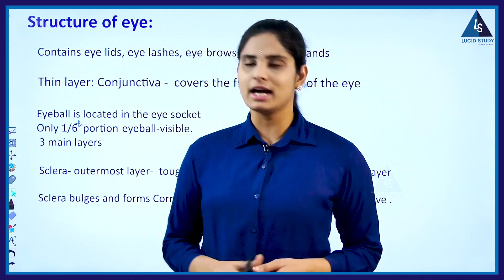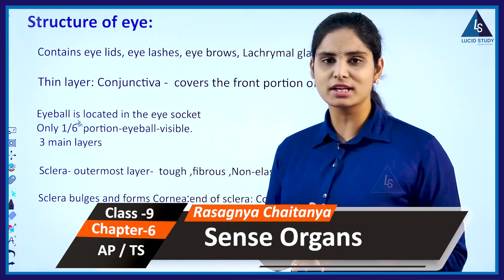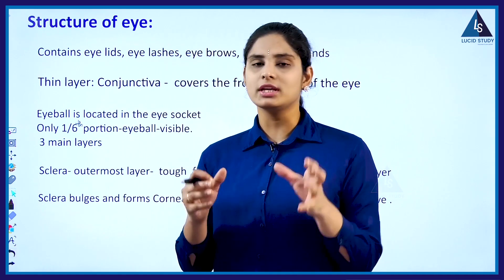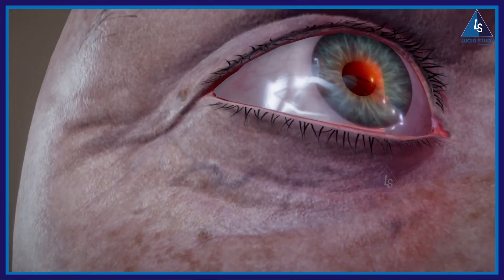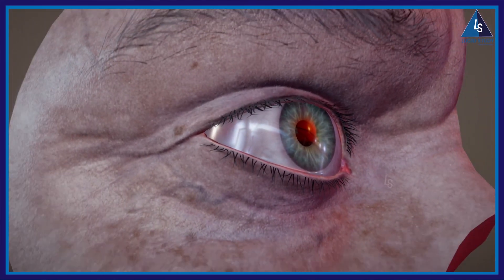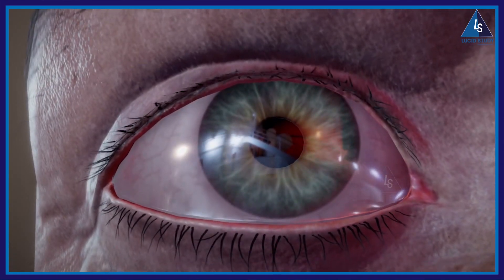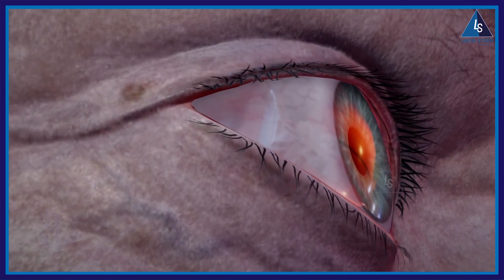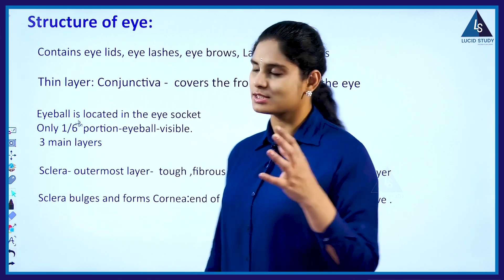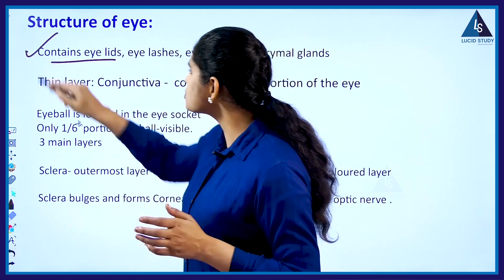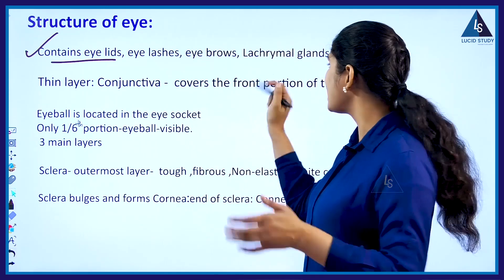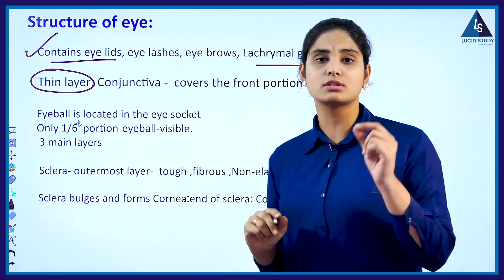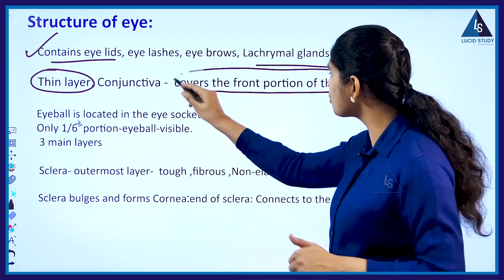Coming to the structure of the eye, we know that the eye is one of the very important sense organs used for the sense of sight and vision. The eye contains structures like eyelids, eyelashes, eyebrows, and lacrimal glands. The water that comes from the eye is produced through the lacrimal glands. A thin layer called the conjunctiva covers the front portion of the eye.